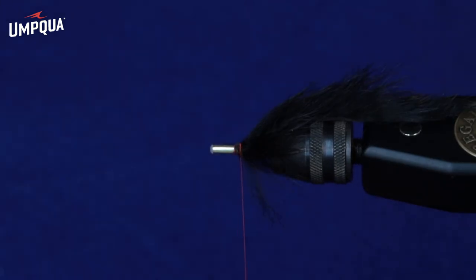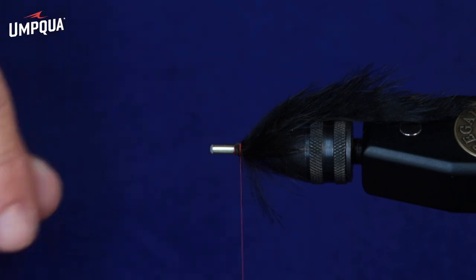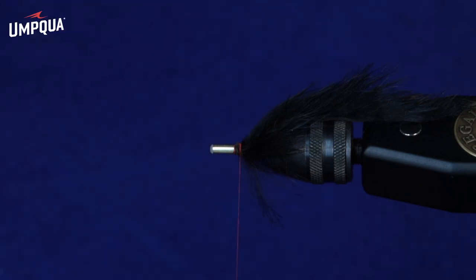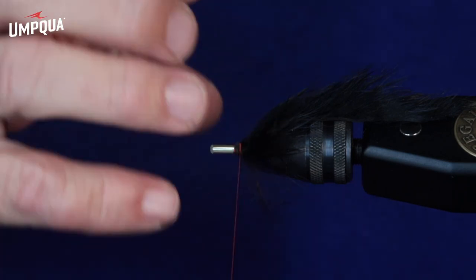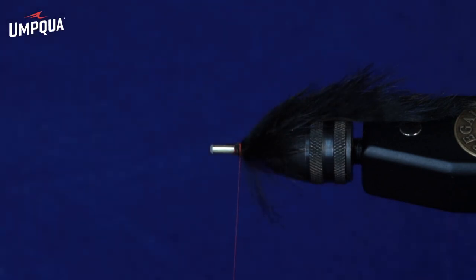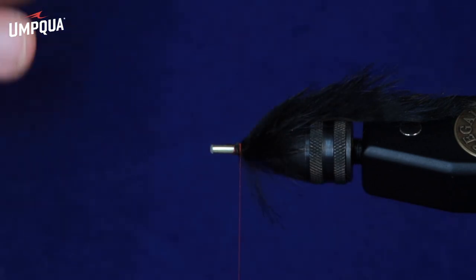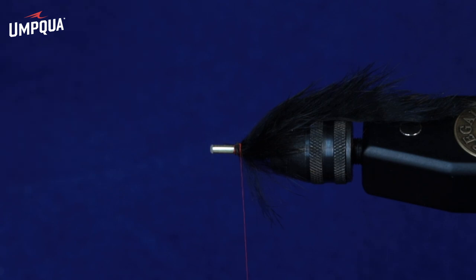Now the next step, we're going to add another layer. You could call it a collar, but another bunch of rabbit in front of the tail. And the reason why I do this is to kind of create a little bit of bulk up front. I don't want this to be a leech. I want it to be more like a fish with that teardrop shape. So, we're going to add some more rabbit.